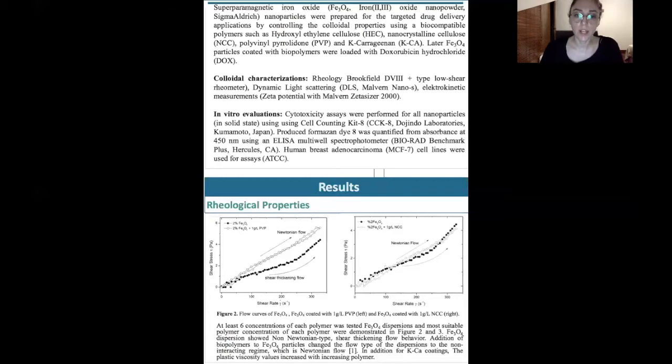Here in the first two graphs on the left-hand side, we can see the difference between uncoated iron oxide nanoparticle and the coated iron oxide nanoparticle. Uncoated iron oxide nanoparticles show shear thickening flow behavior, but when coated with polymers at one gram per liter concentration, the flow converted into a Newtonian flow. This was also seen in all the other polymers we used.